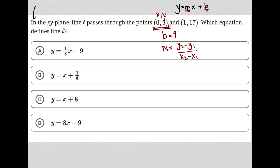So this is my x1 and y1. This is my x2 and y2. So I just have to plug those things in. So I'd have 17 minus 9 over 1 minus 0, which is equal to 8 over 1, which of course is just 8.